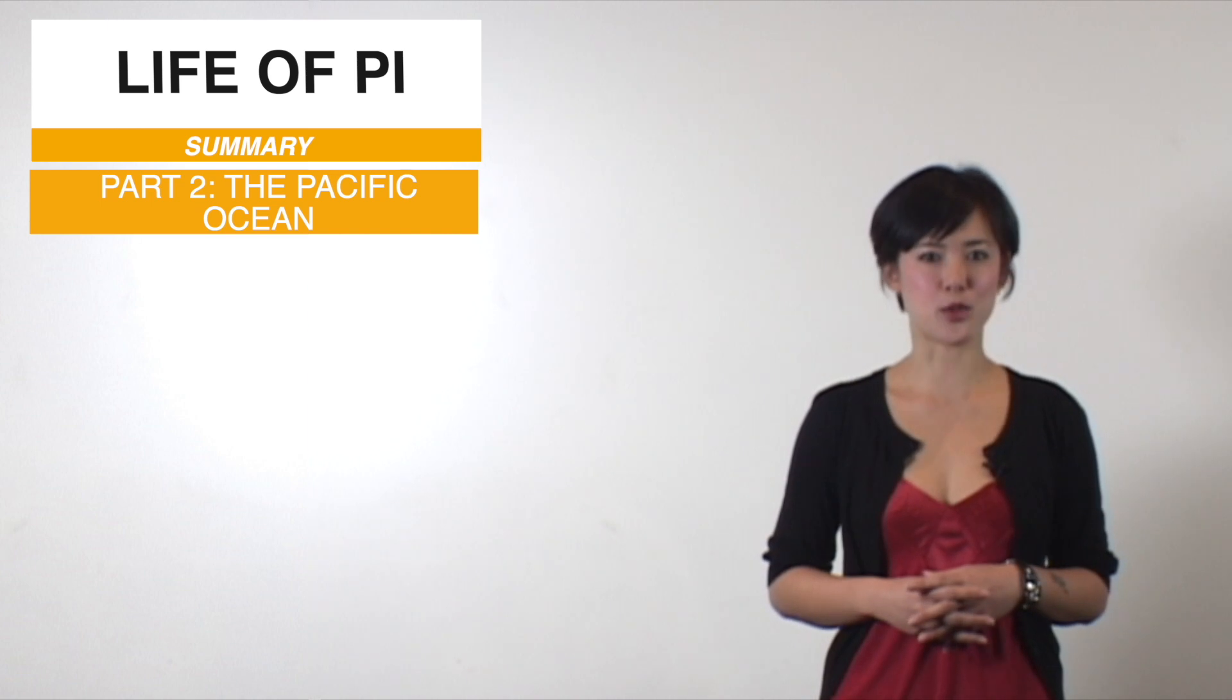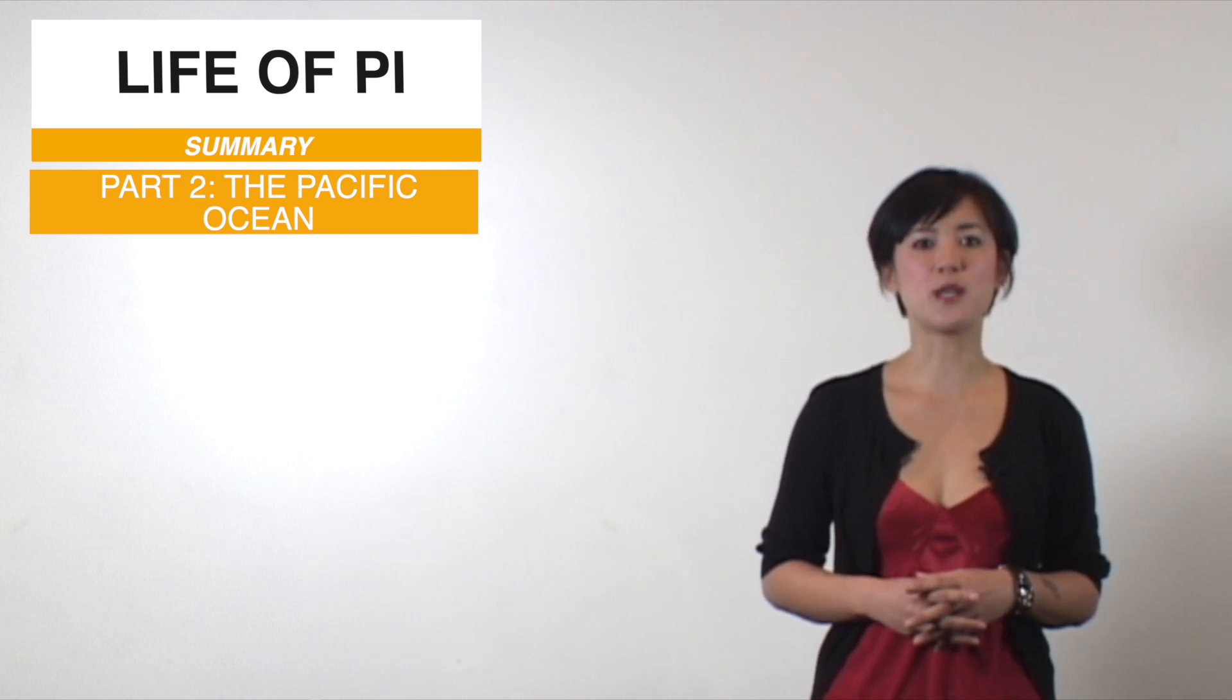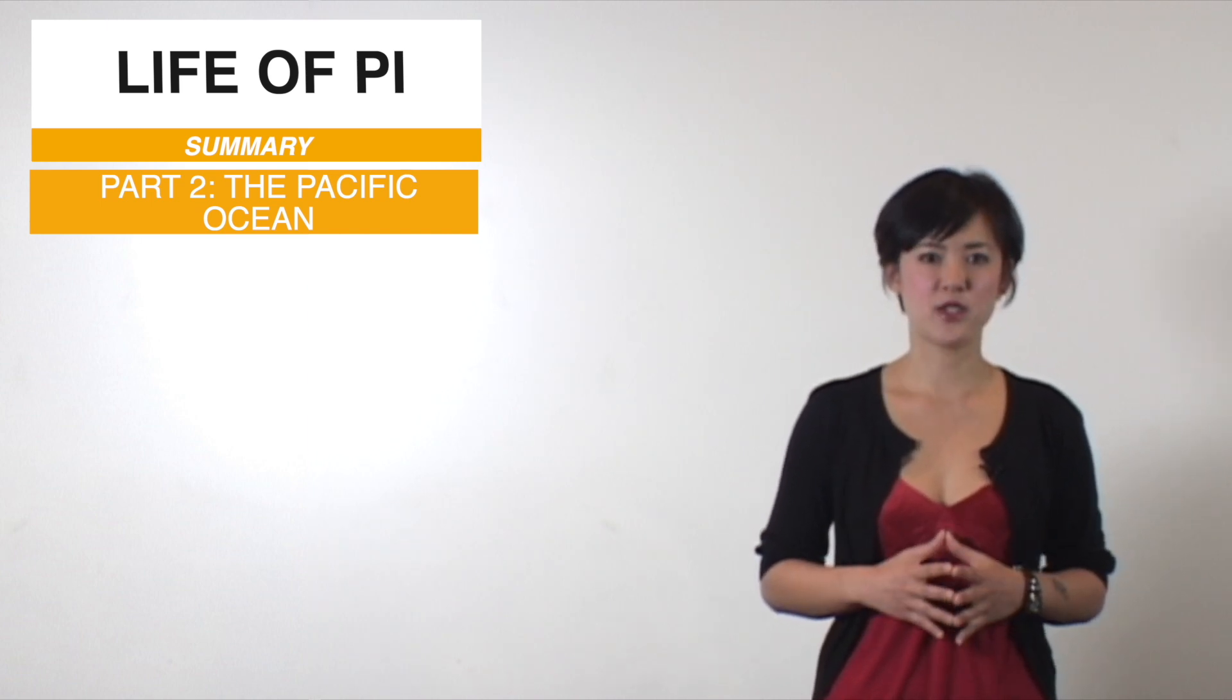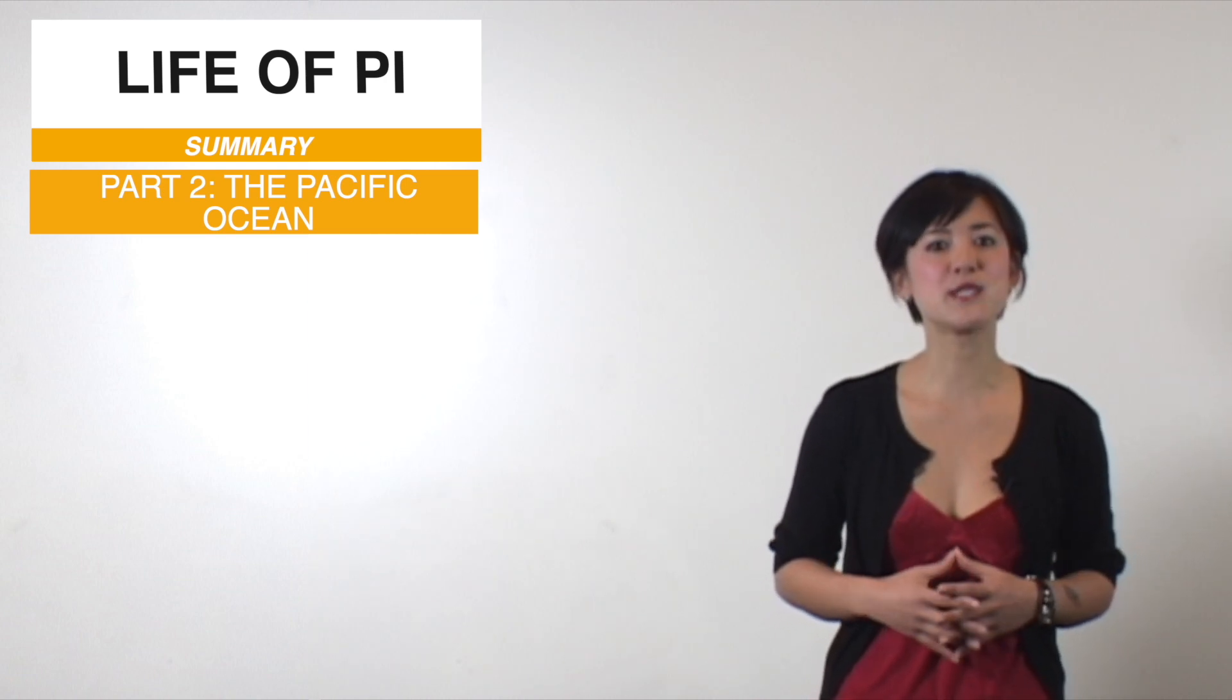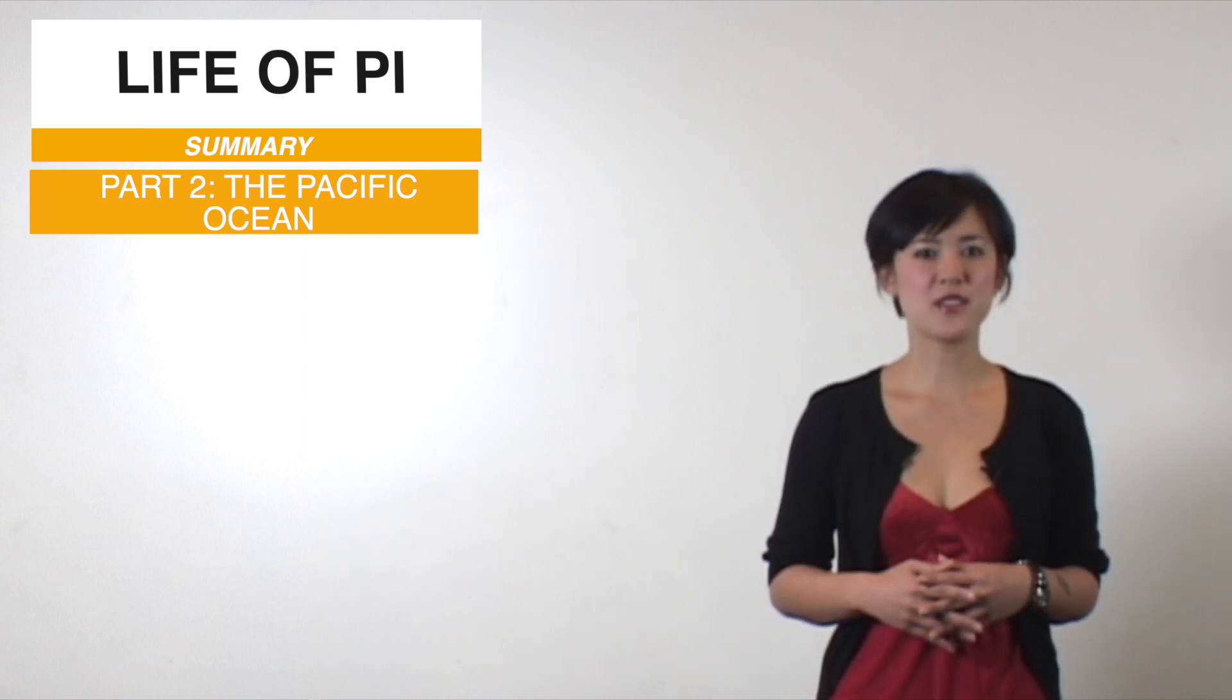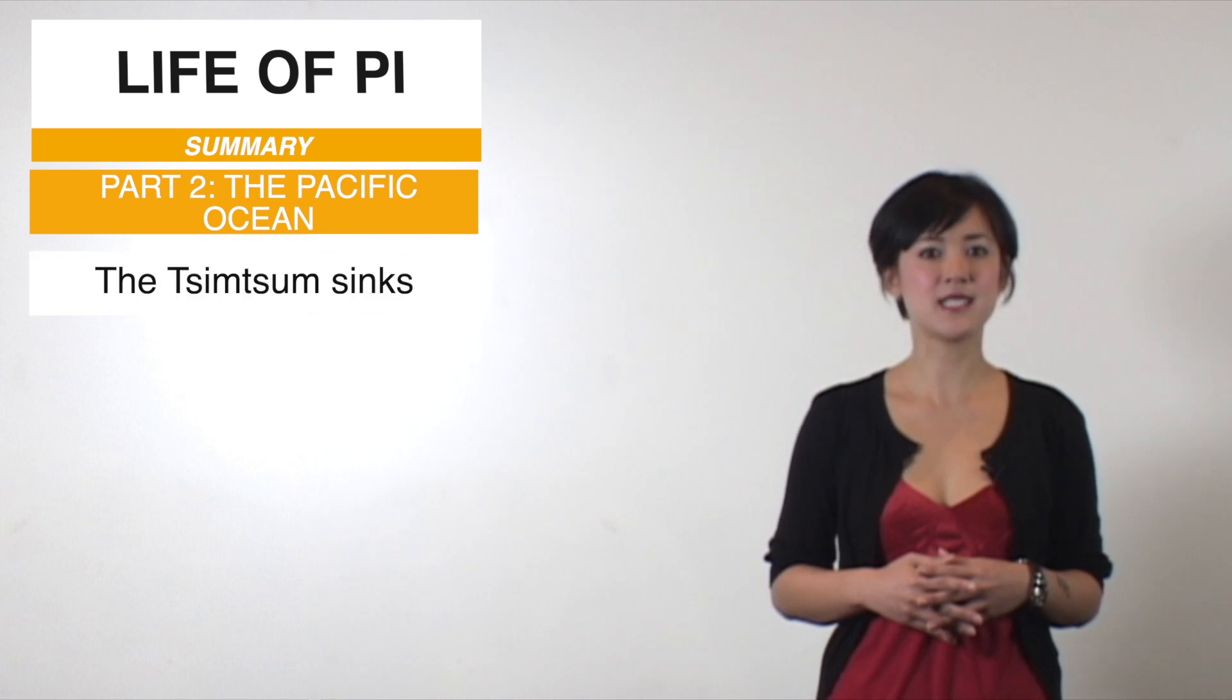Part 2: The Pacific Ocean. This section is told in a pretty straightforward fashion. There's an occasional flashback, but for the most part, Pi reveals his story as it happens. At the start of Chapter 37, the SimSum sinks.